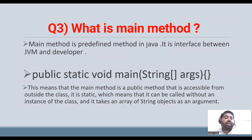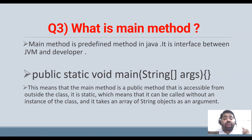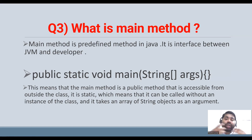The next question is: what is the main method? This is a very basic Java question. When you start your Java code, execution starts from the main method — you can see 'public static void main.' When you do not define the main method in your class, you will get a runtime error, not a compile-time error. Without a main method you can compile the code, but you cannot execute it.